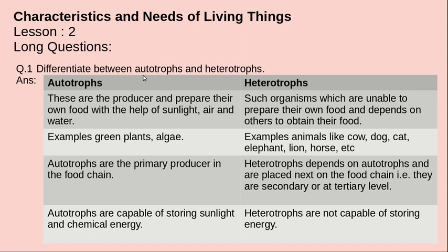Autotrophs are organisms that prepare their own food — such as plants and algae. They are the producers and prepare their own food with the help of sunlight, air, and water. Green plants have a chemical called chlorophyll, a green pigment found in chloroplasts, which uses sunlight, air, and water to prepare food.